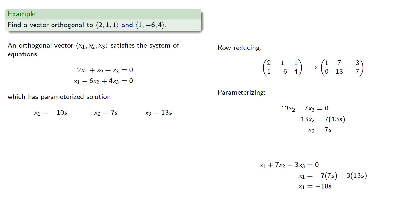And again, we can choose anything we want for our free variable. And if we make the easy choice and let it be 1, we get one of the orthogonal vectors: (-10, 7, 13).